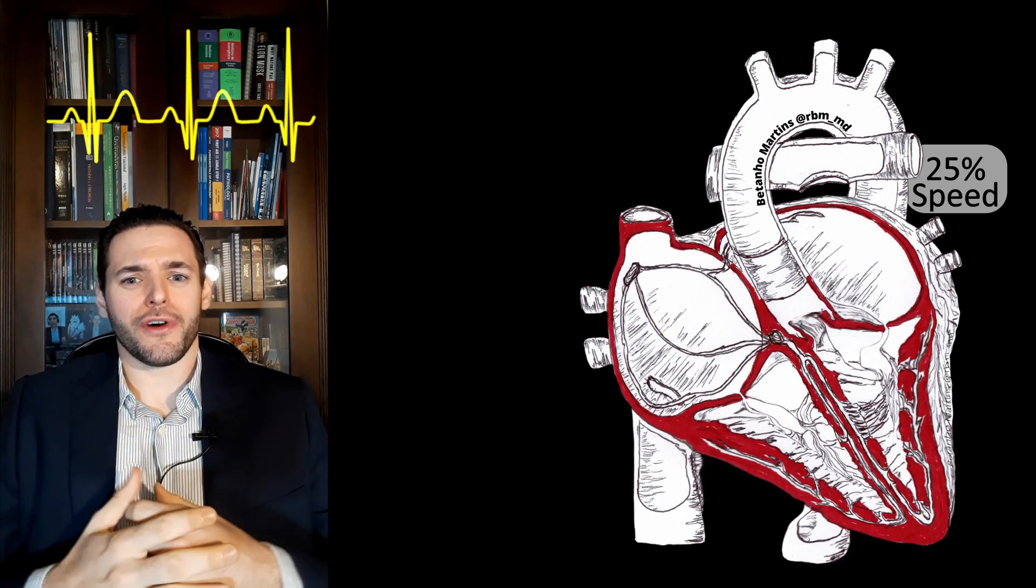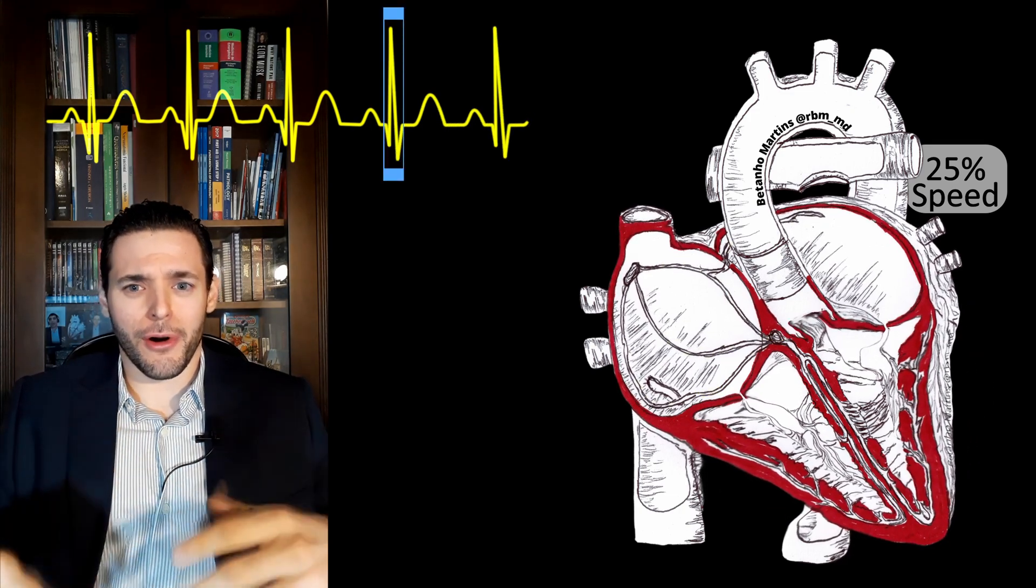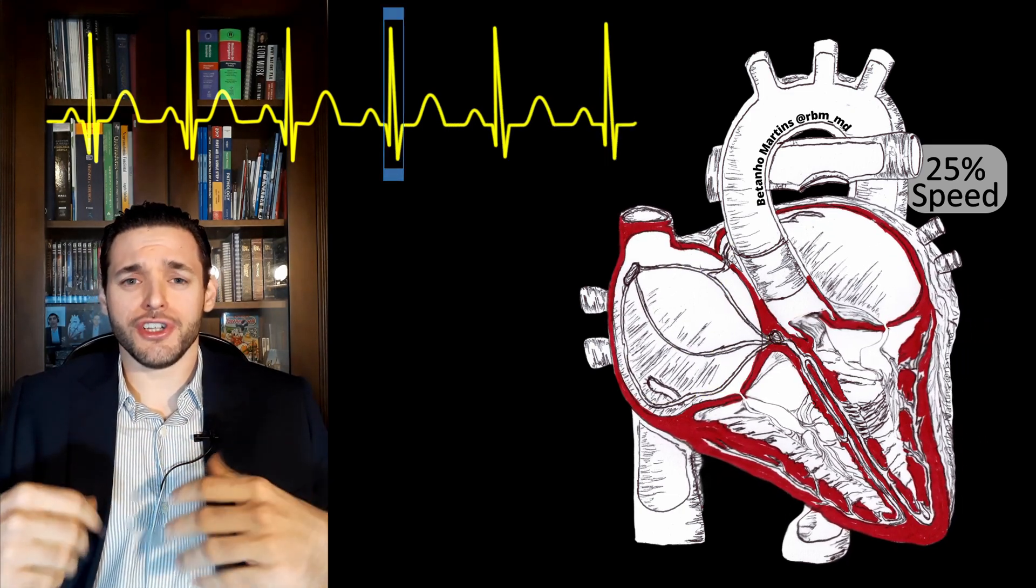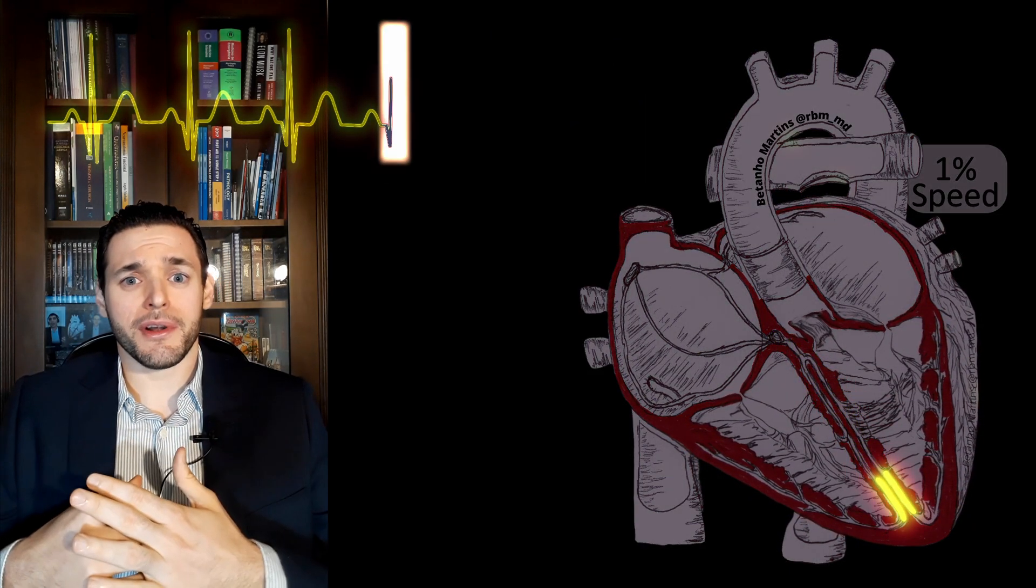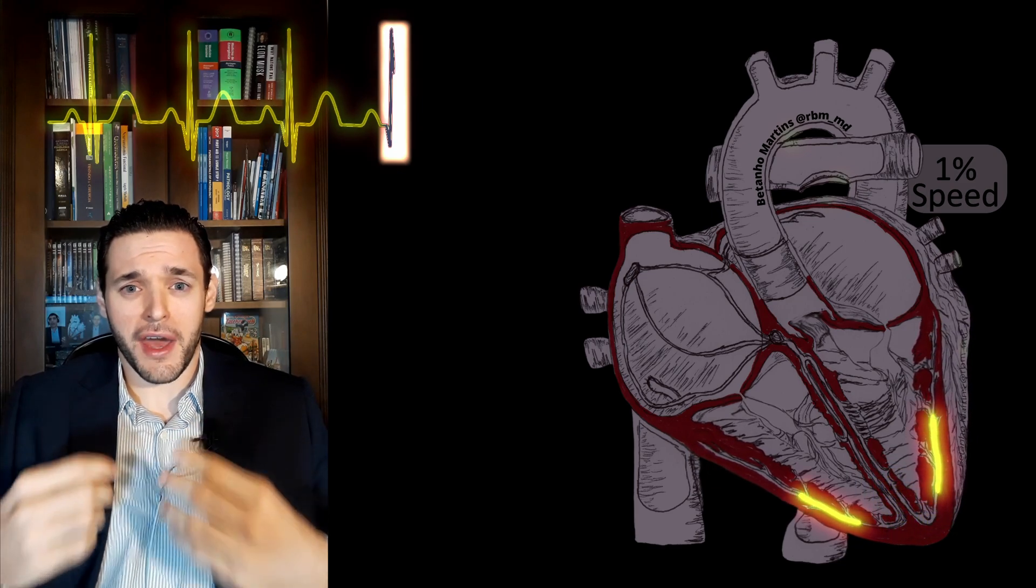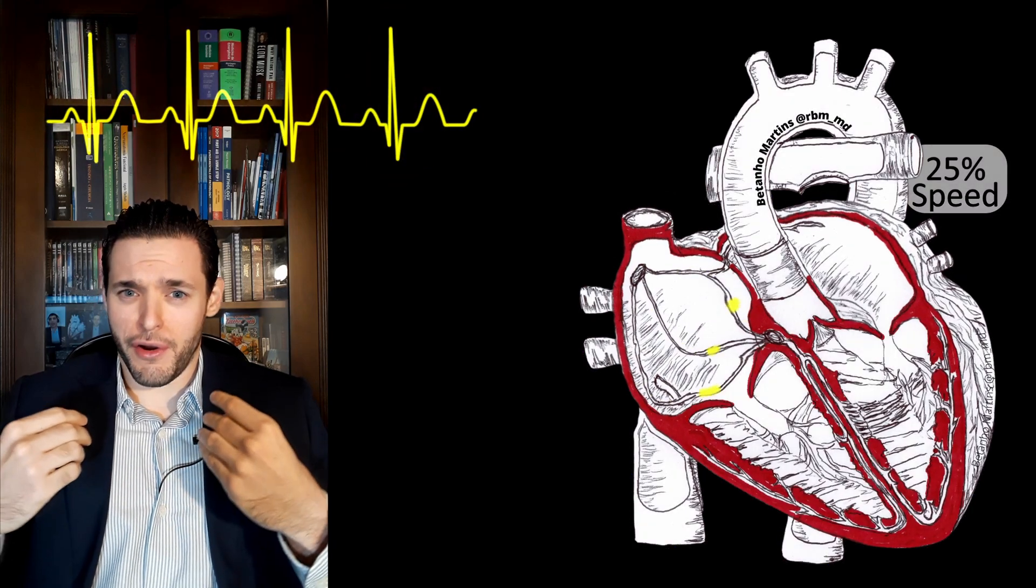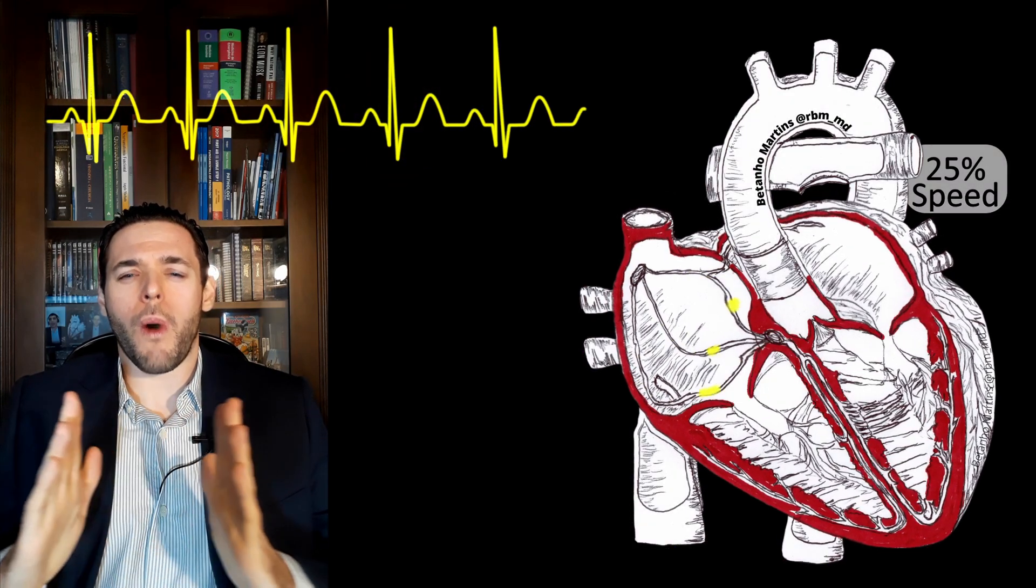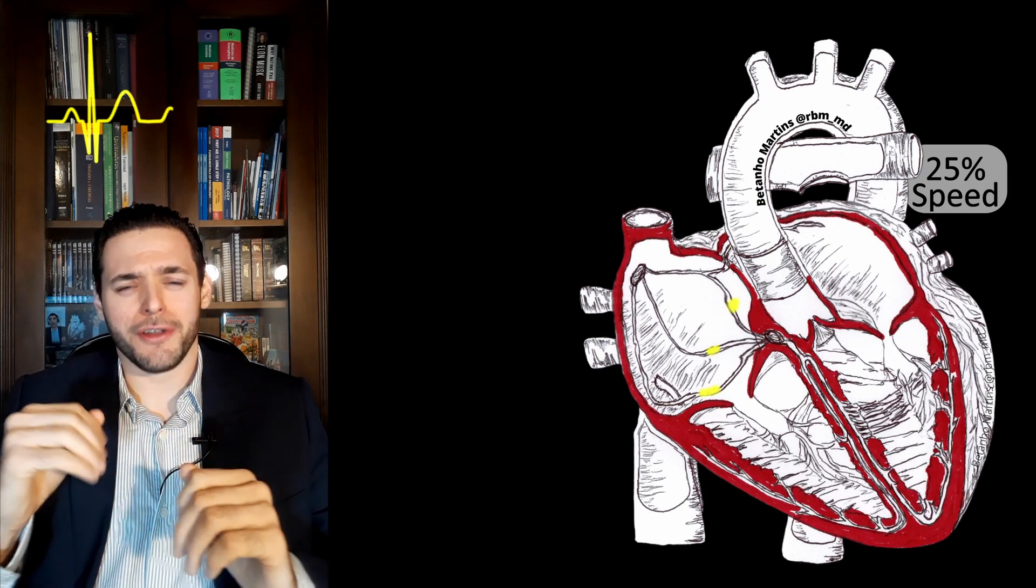We will also have the normal narrow QRS complex. After all, ventricular depolarization occurs from the bundle of His and the Purkinje fibers, the specialized fast depolarization system of the heart, and this occurs very fast. There is no widening; it occurs during a very small interval of time.